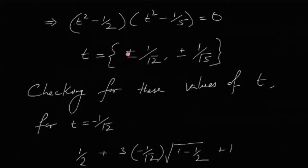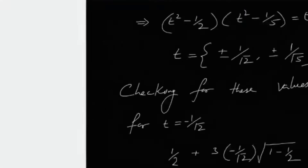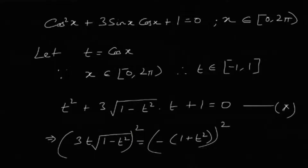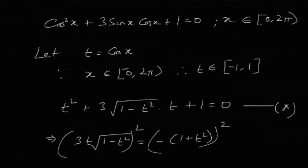Now don't rush — you might think that since we have four solutions for t, the answer is four. But wait: since we squared the equation while solving, it might have created extraneous solutions. For example, if the equation is t = 1 and you square it, you get t² = 1, which gives t = ±1. But we originally only had t = 1, not -1, so -1 is extraneous.